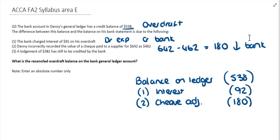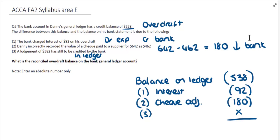The trick with this question was recognizing at the beginning that the credit balance was an overdraft balance. Starting off with minus $538 and then being very careful with the adjustments — working out whether we need to reduce or increase our bank account. For the third option, a lodgment of $382 has still to be credited by the bank. That's been recorded in our ledger but the bank hasn't yet recorded it, so it has no effect on our ledger adjustments. To wrap up: taking minus $538, reducing it further by $92 and then by $180, gives us $810 as our overdraft balance.